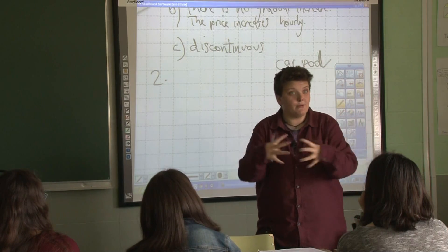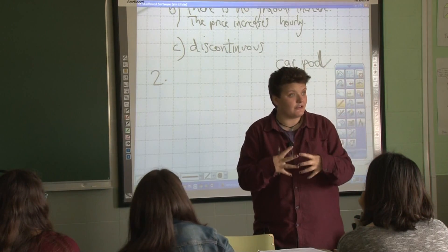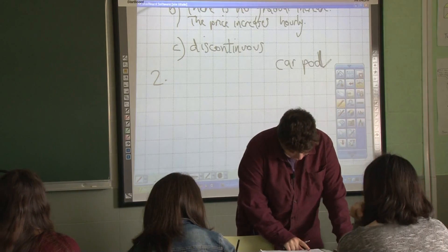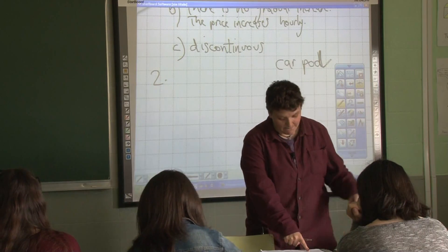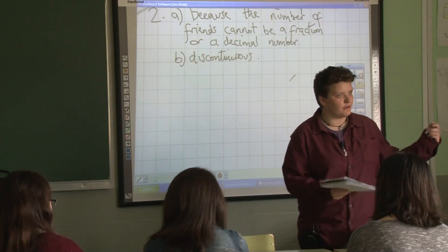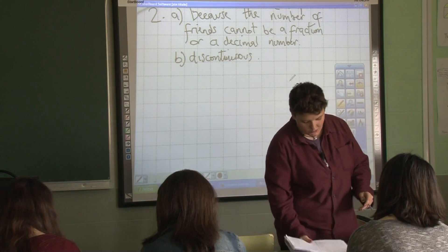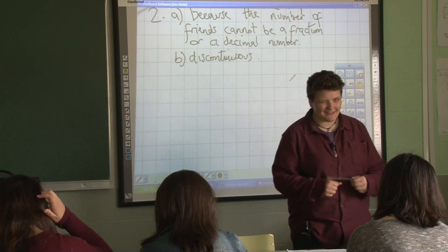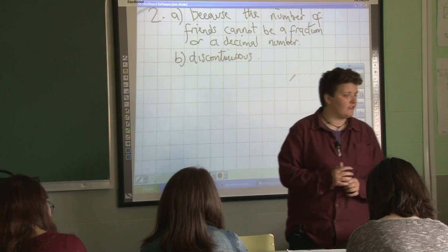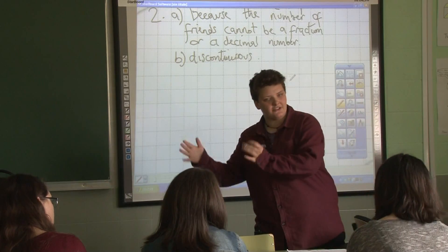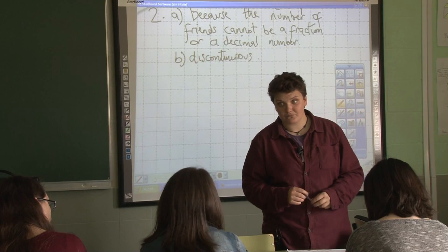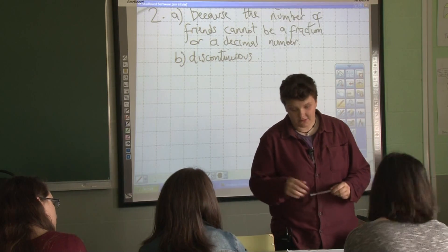It says here: how many friends pool their money, and what it goes towards. Explain the function's trend as the number of friends grows. As the number of friends increases, what's the trend of the function?